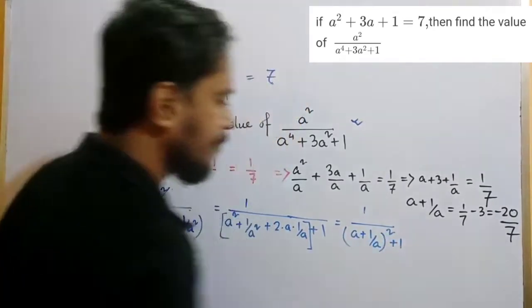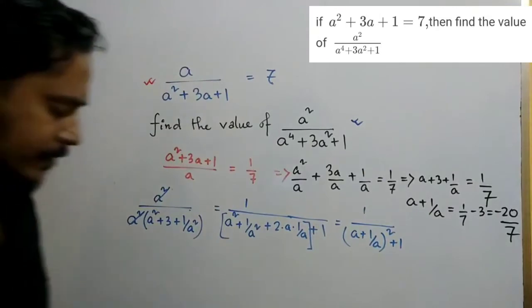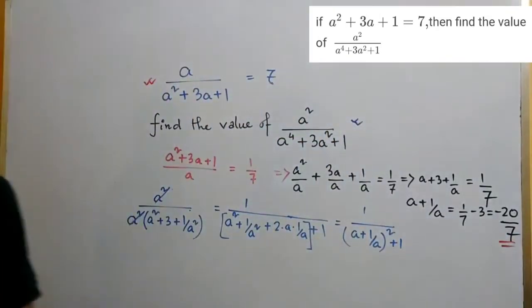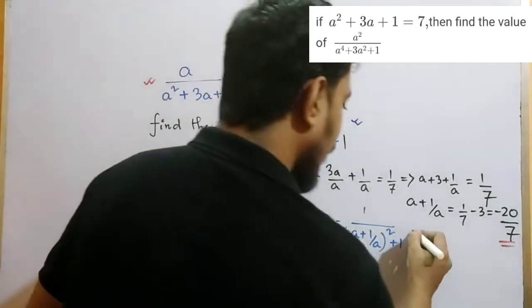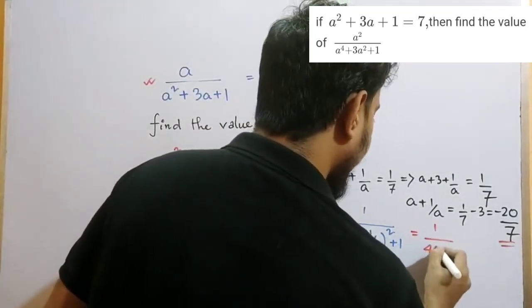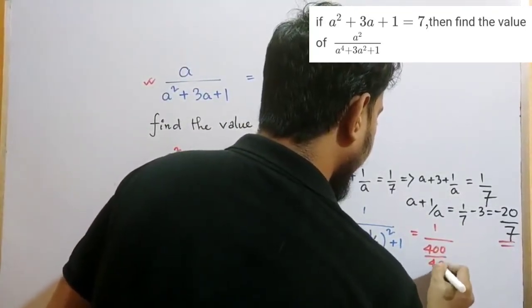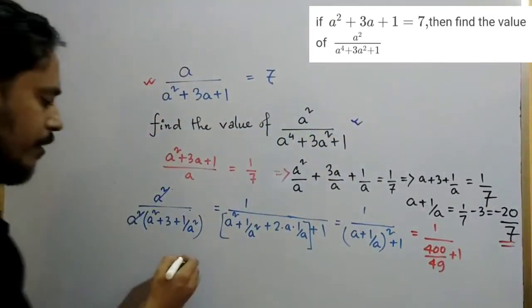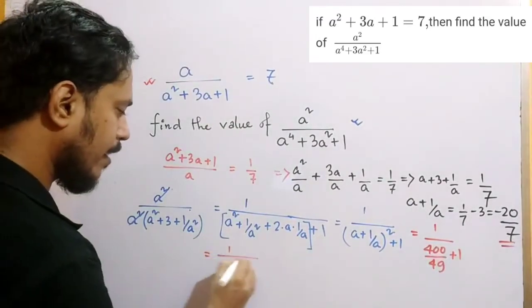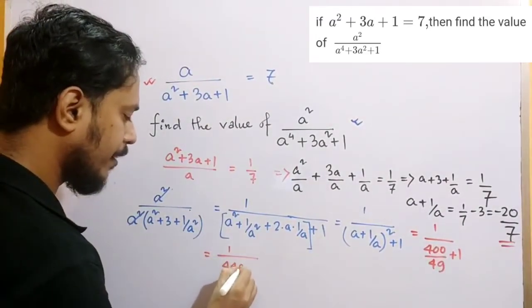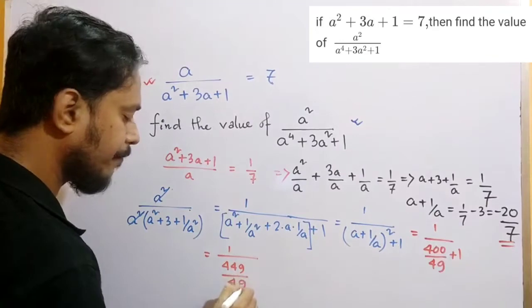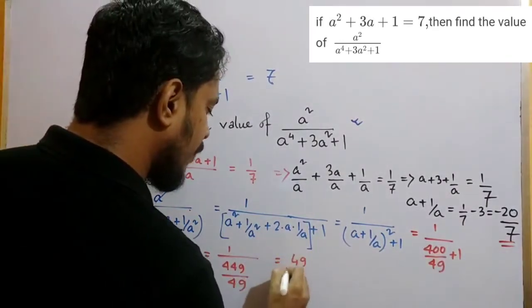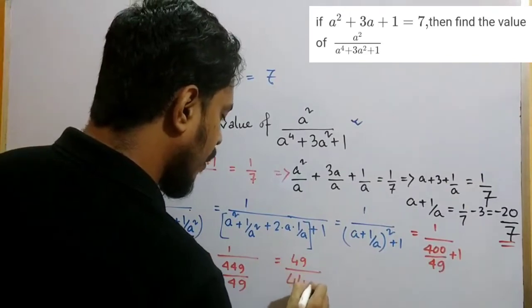A squared minus 2, and this equals 400 by 49 minus 20 by 7, which equals 449 by 49.